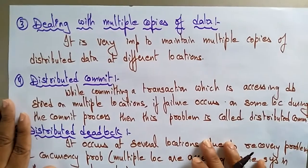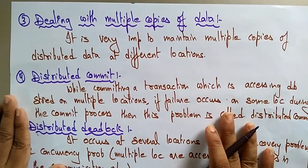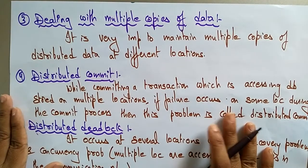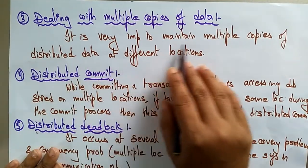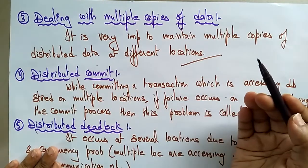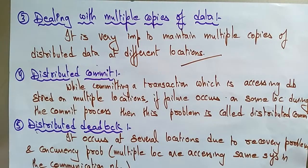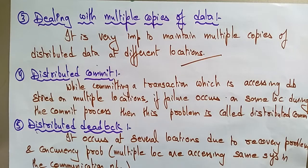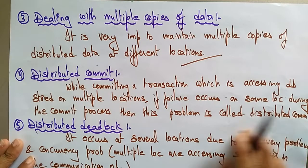Next is dealing with multiple copies of data. It is very important to maintain multiple copies of distributed data at different locations. If you maintain different copies at different locations, if any system fails, you can access a copy from one of the other locations.